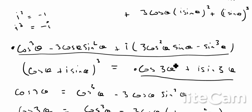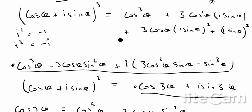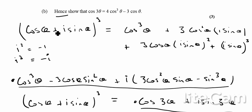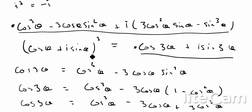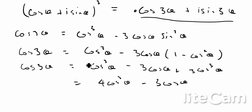So that's quite a tricky question involving a binomial expansion, then De Moivre's theorem, and then a trig identity — sin²θ = 1 - cos²θ. It would be classified as quite a difficult question, probably one of the Section B questions at the end of the paper.